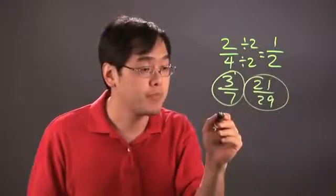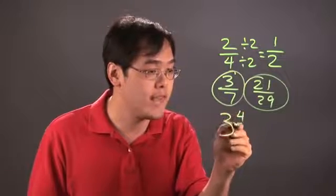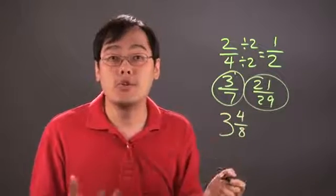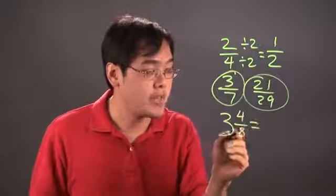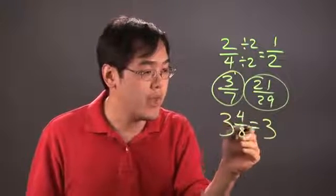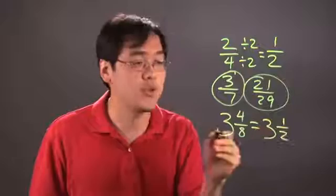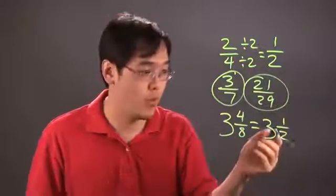If you have a mixed number, if you have three and four eighths for example, you can reduce first if possible but you leave the whole number alone. So four eighths reduces also to one half, so three and four eighths can be thought of as three and one half.